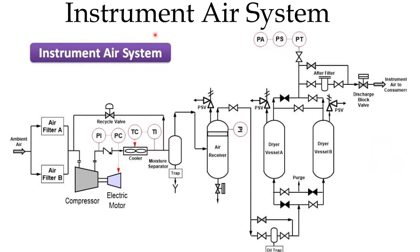This is the schematic diagram of the instrument air system used in offshore, marine facilities and small capacity plants. It is a package type compressor. Ambient or atmospheric air is drawn through filters entering the compressor. Compressor discharge through NRV is cooled in the air cooler. Moisture is separated in the moisture trap. This is the recycle valve to maintain the pressure. The air then goes to the plant air receiver or wet air receiver, which is provided with a pressure safety valve.